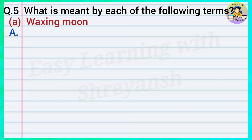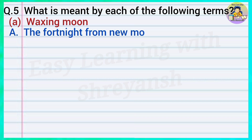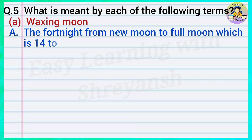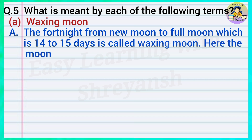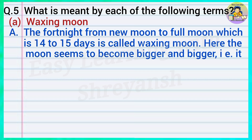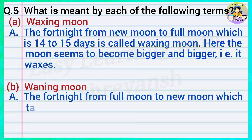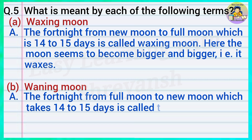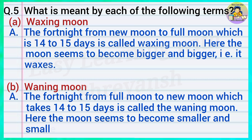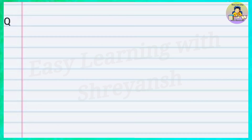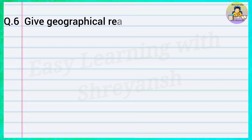Question number five: What is meant by each of the following terms? A: Waxing moon — answer: The fortnight from new moon to full moon, which is 14 to 15 days, is called waxing moon. Here the moon seems to become bigger and bigger — that is, it waxes. B: Waning moon — answer: The fortnight from full moon to new moon, which takes 14 to 15 days, is called the waning moon. Here the moon seems to become smaller and smaller — that is, it wanes.